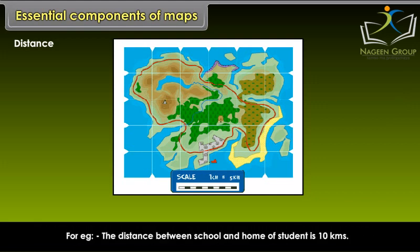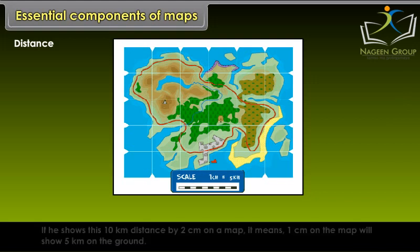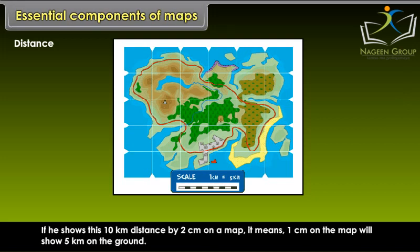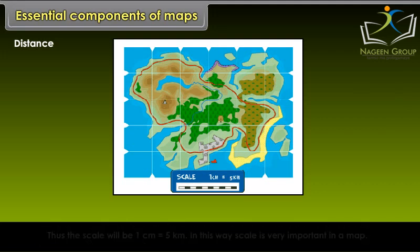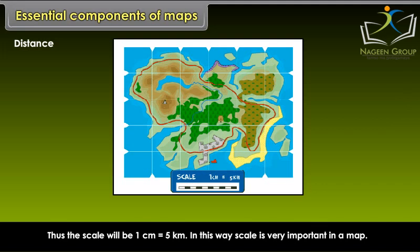For example, the distance between school and home of a student is 10 km. If he shows this 10 km distance by 2 cm on a map, it means 1 cm on the map will show 5 km on the ground. Thus, the scale will be 1 cm equals 5 km. In this way, scale is very important in a map.